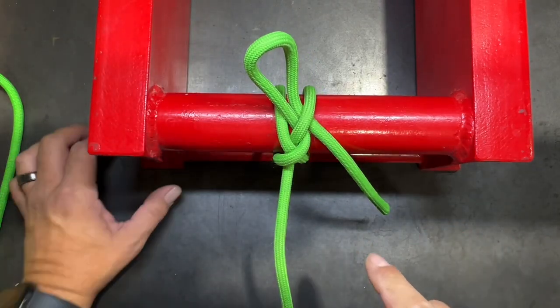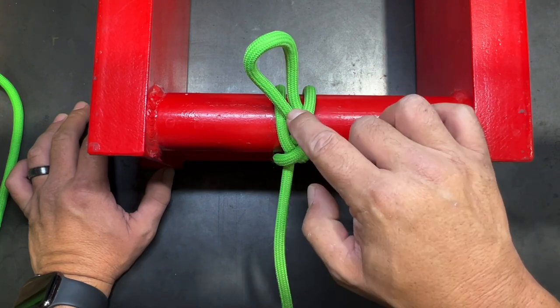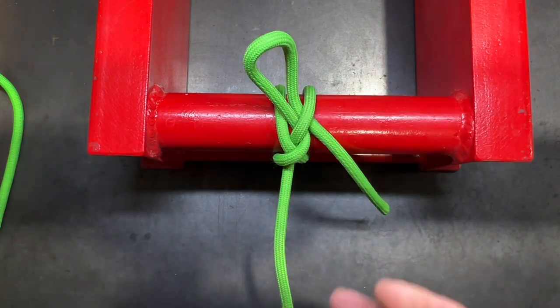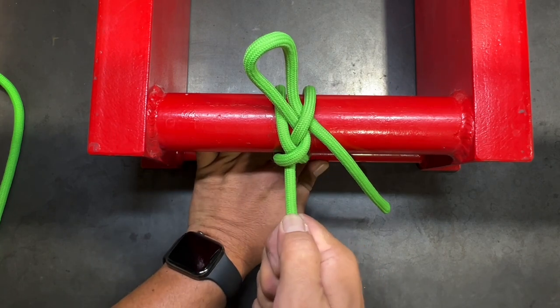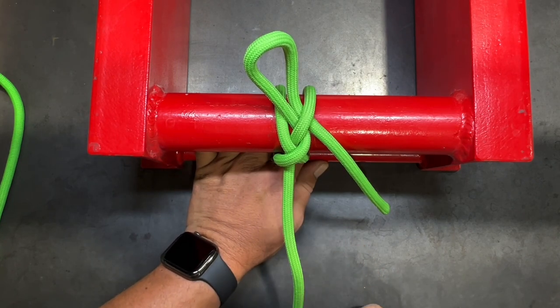It's a very good knot because of the fact that the first wrap is holding the working end of the rope and thereby will not let it come undone so long as you have pressure on the standing end of the rope.